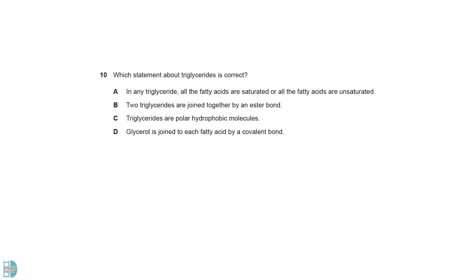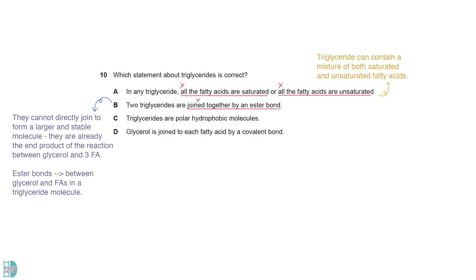A is incorrect because a triglyceride can contain a mixture of both saturated and unsaturated fatty acids. B is incorrect as two triglycerides cannot directly join to form a larger and stable molecule. Triglycerides are already the end product of the reaction between glycerol and three fatty acids. Ester bonds are found between glycerol and fatty acids in a triglyceride molecule. C is wrong because triglycerides are non-polar, hydrophobic, and insoluble in water. D is correct, as glycerol is joined to fatty acids via the ester bond — it is a covalent bond.